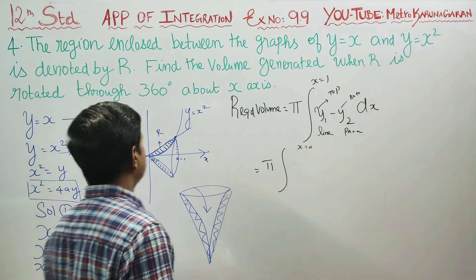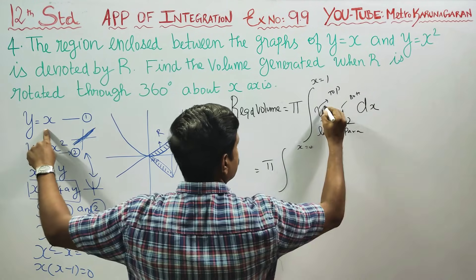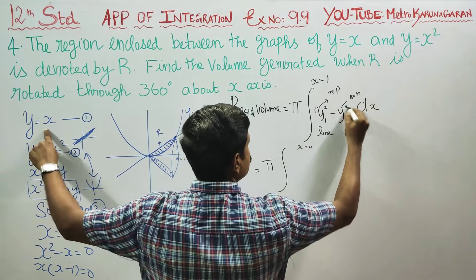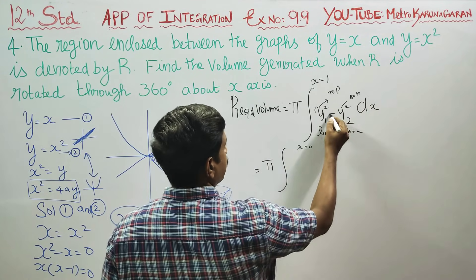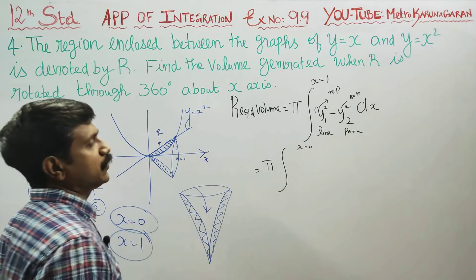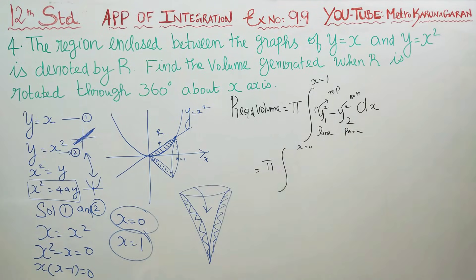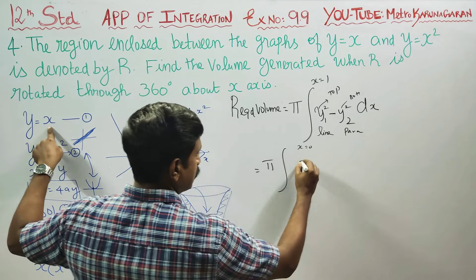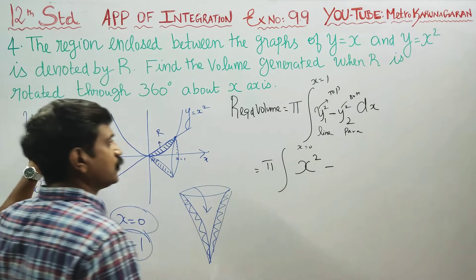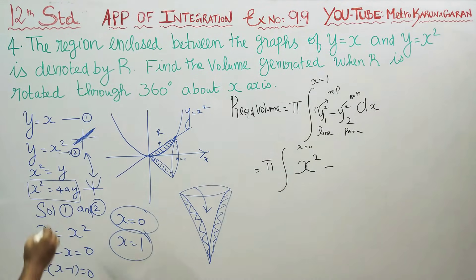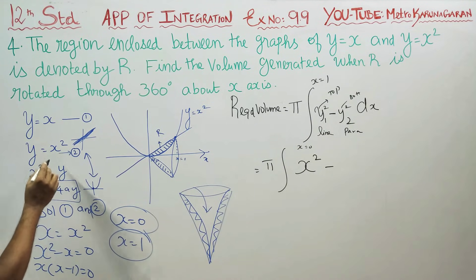The straight line gives y₁ = x, so y₁² = x². The parabola gives y₂ = x², so y₂² = x⁴. The volume integral becomes π times the integral from 0 to 1 of (x² − x⁴) dx.